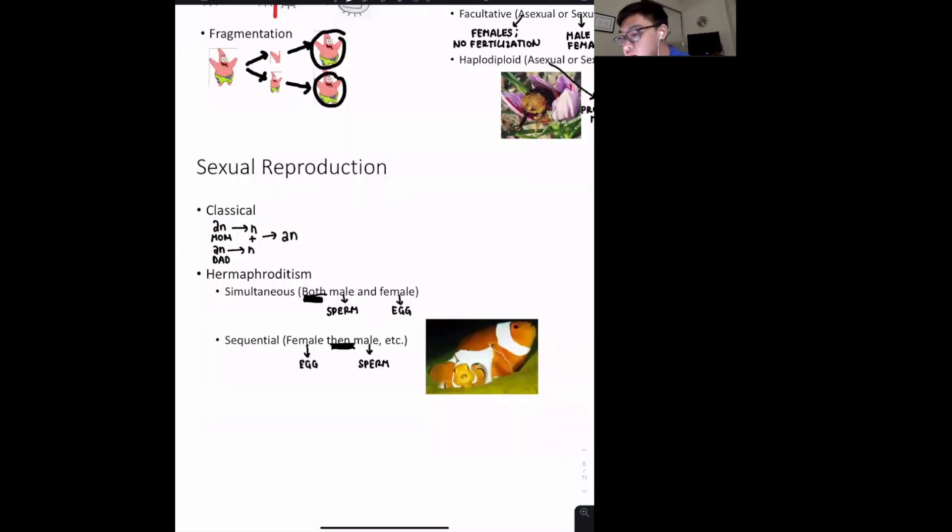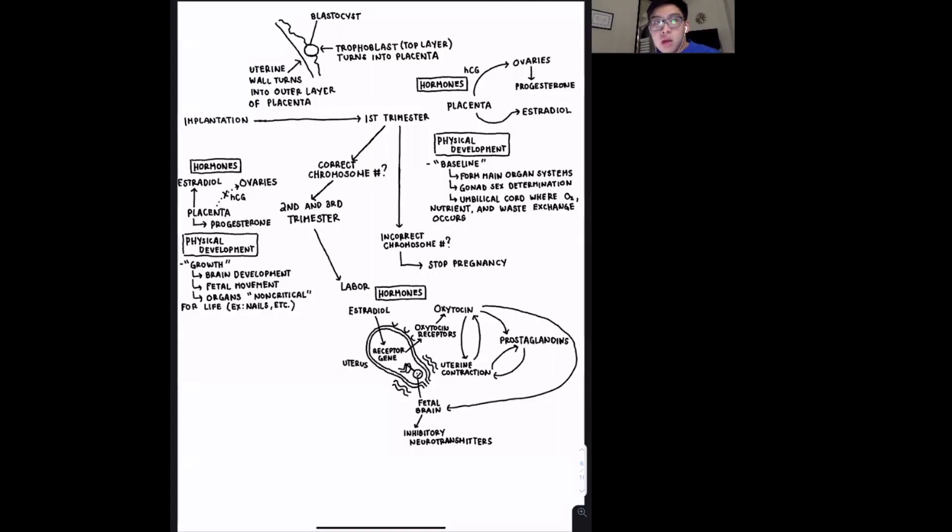And so the last mode of reproduction we have is sexual reproduction. We won't go over too much of what classical is, but for hermaphroditism, we essentially have simultaneous and sequential. So simultaneous emphasis on the fact that it's both male and female, so they have sperm and egg cells at the same time. Whereas for sequential, it's a female and then a male or vice versa.